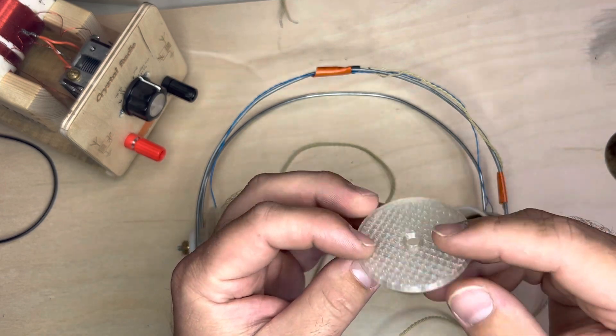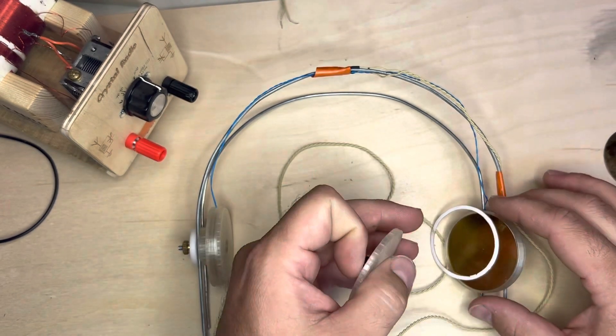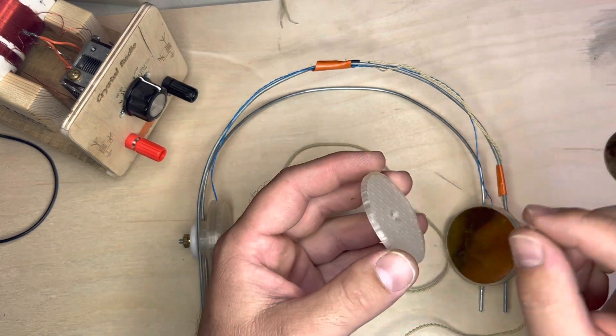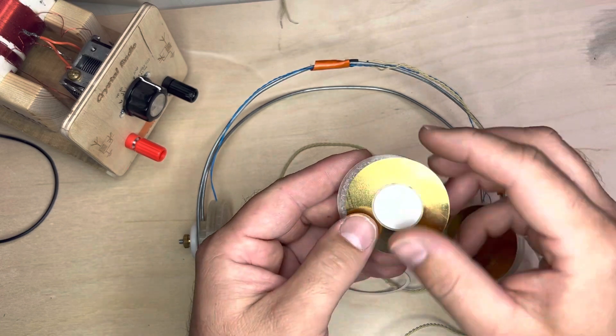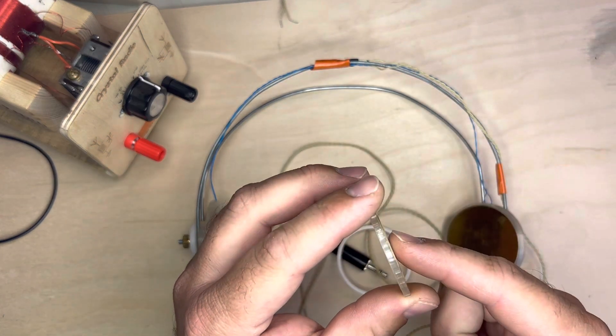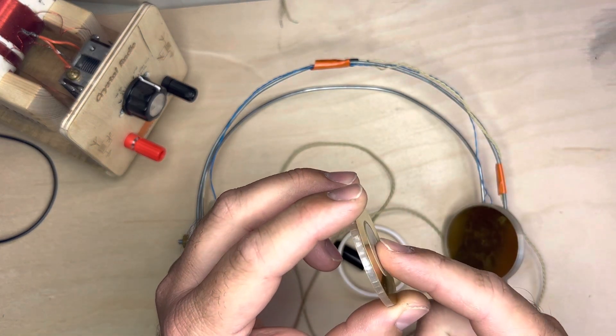And then I have a small paper disc. Now this is important: you don't want the piezo disc to completely contact your housing on the front or the back because you want this disc to be able to freely vibrate just like that.